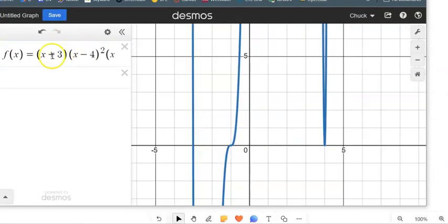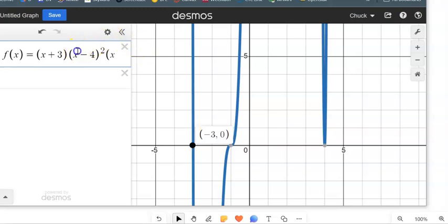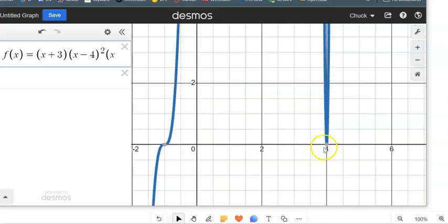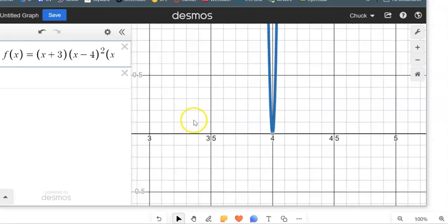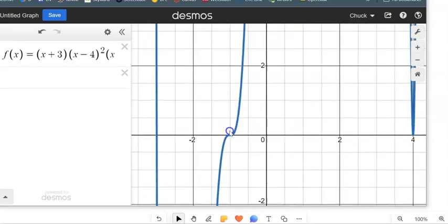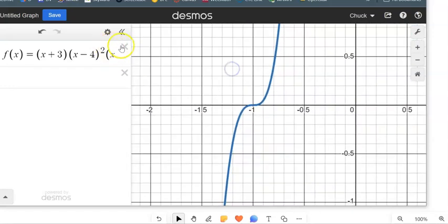So look at this. The one that comes from negative three looks like a nice straight line. The one that comes from x minus four looks like a quadratic. You zoom in, right? Does a little quadratic there.